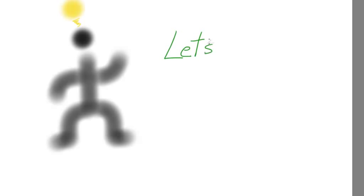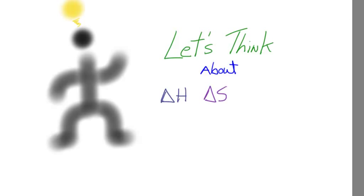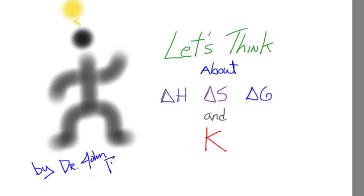After watching this video, you should have a fundamental understanding of the relationship between the equilibrium constant for a reaction and the enthalpy change, entropy change, and the free energy for that process. I'm going to use a simulation here to diagrammatically illustrate these relationships and talk about four different hypothetical situations where I change the signs of delta H and delta S and show you how that affects the temperature dependence of a process and how K is affected.